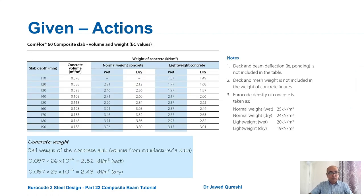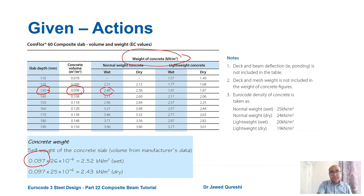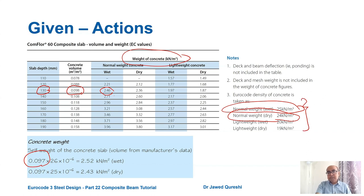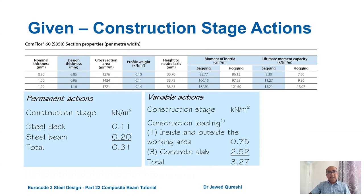First we work out concrete weight in wet and dry situations. For the 130 mm slab, concrete volume is approximately 0.097 m³/m². In this example the wet density is 26 kN/m³ and dry density is 25 kN/m³, giving the load of wet concrete and load from dry concrete at those respective densities.